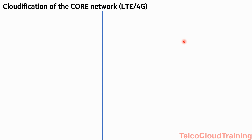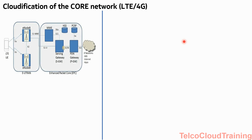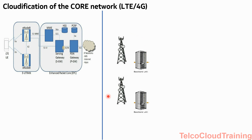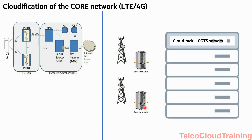What happened in the last four or five years is the cloudification of the core network. All the major operators who deployed LTE or 4G kept the RAN in the traditional way — proprietary hardware, proprietary software, proprietary cabinets — but for the core part, they converted it from traditional legacy boxes to the telco cloud.